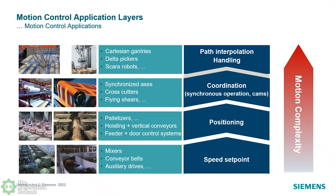A little bit more complex than speed set point is positioning. When you do positioning, you're moving from A to B, B to C, C to D, or just back and forth between A and B. Applications like palletizers, vertical conveyors, feeders, door control systems, index drives, or baggage handling — where you have a diverter that just goes from A to B and back.